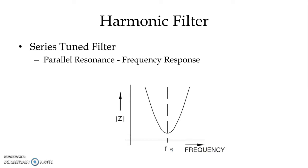Looking at the frequency response, we have impedance plotted against resonance frequency. At a certain frequency the impedance is lowest. To avoid parallel resonance, we normally do not design our filter at exactly the harmonic frequency to be filtered. For example, if we want to filter out the fifth harmonic, we design our series tuned filter for the 4.7th harmonic. This minimizes the possibility of parallel resonance between the filter impedance and the source impedance.